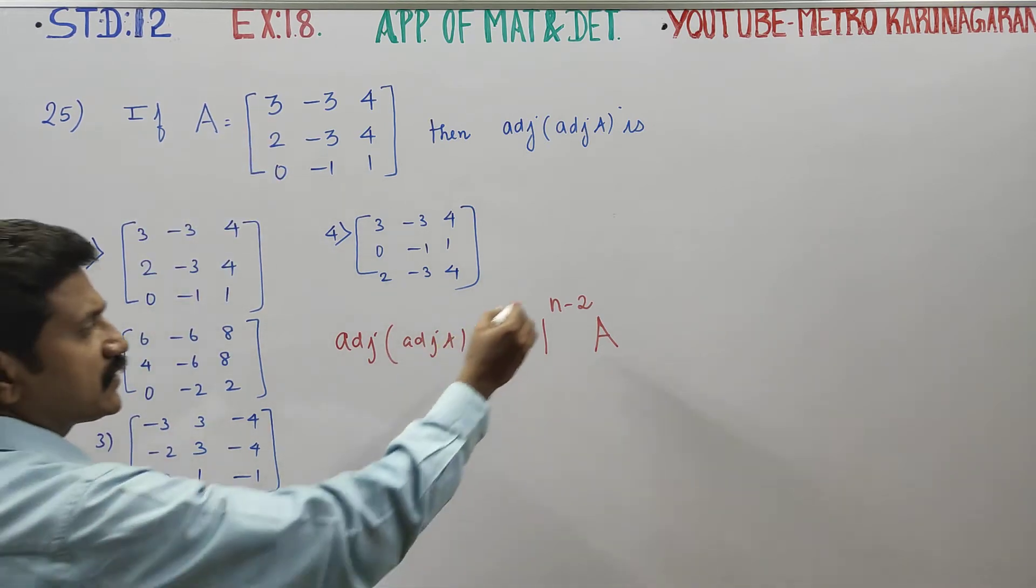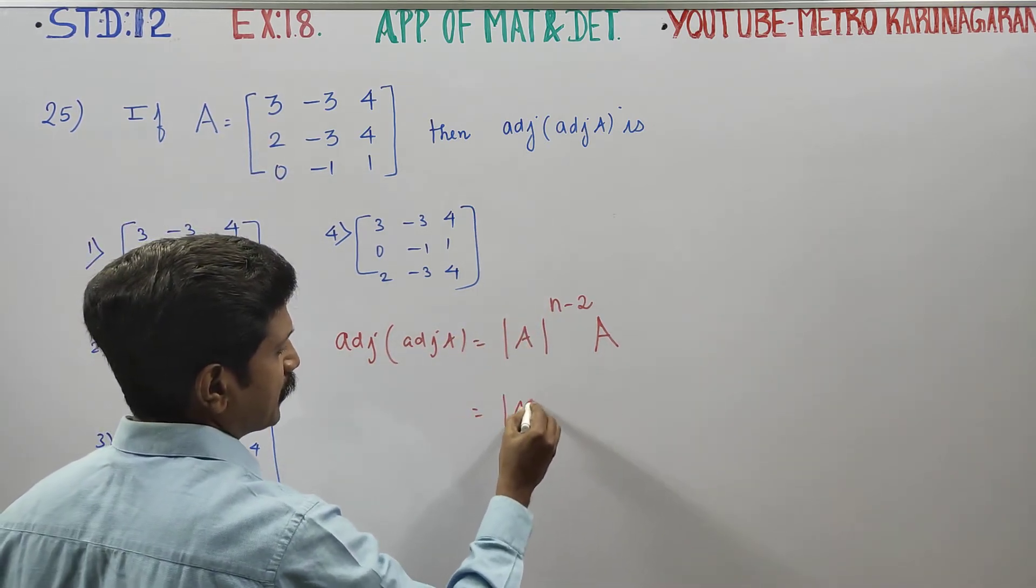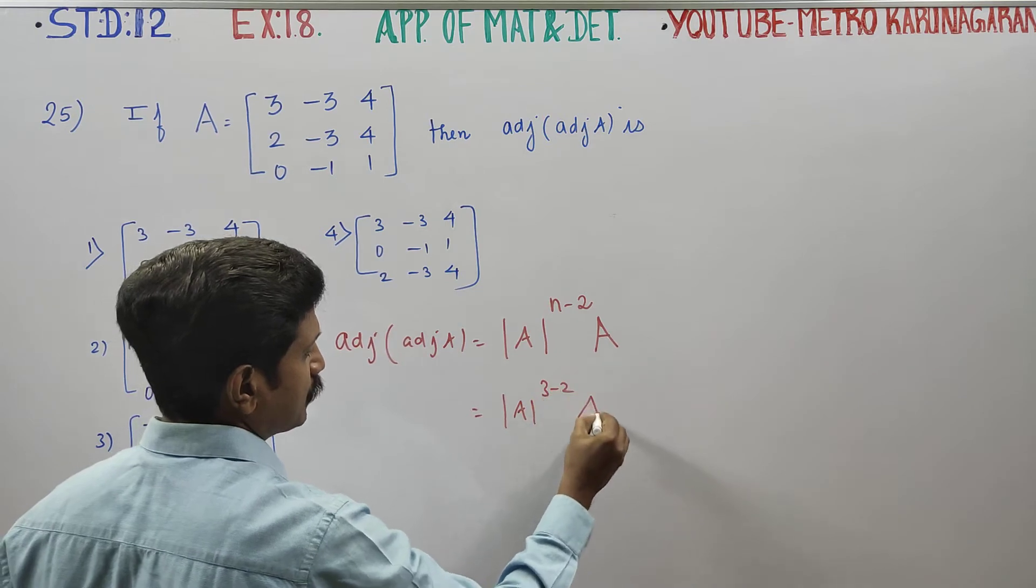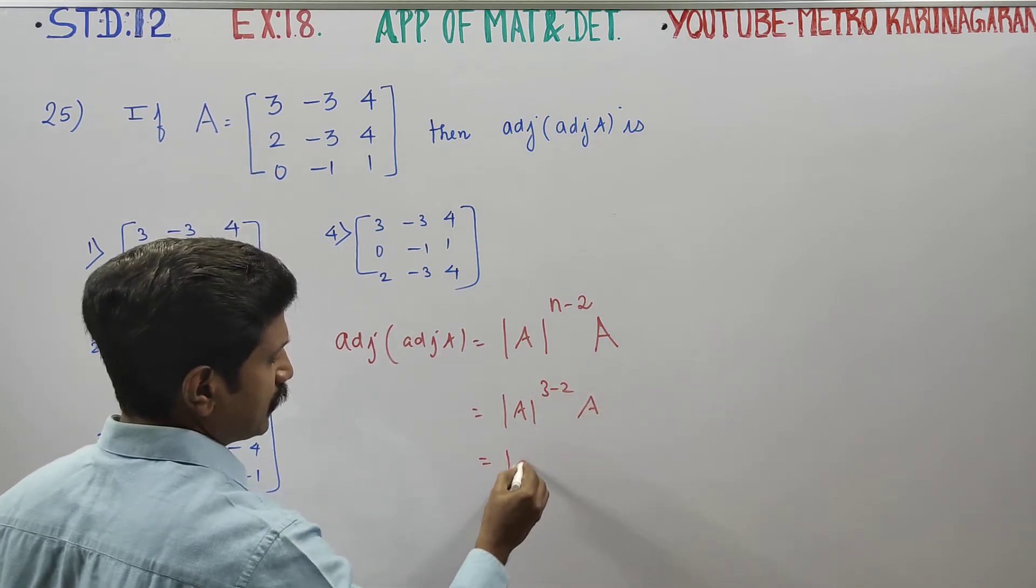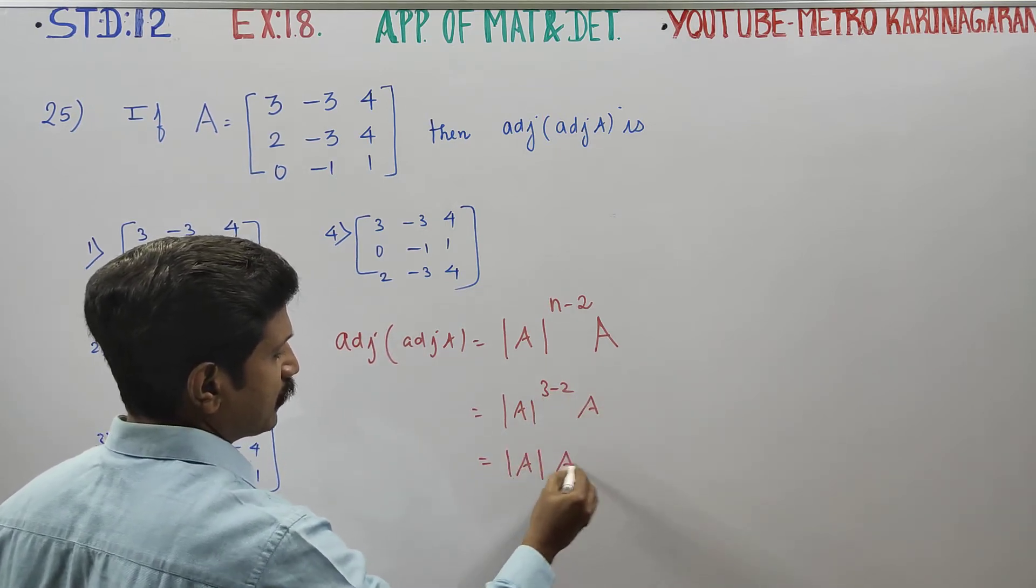We have 3 by 3 matrix, so we substitute 3. Determinant A into 3 minus 2 into A, that is determinant A into A. That is our final answer.